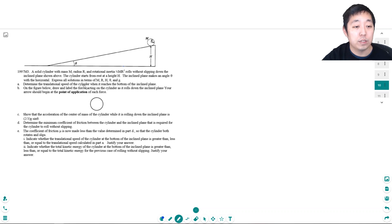Determine the translational speed of the cylinder when it reaches the bottom of the inclined plane. You can do this through energy. We've done these before with either energy or doing a free body diagram and the kinematic equations, but energy is a lot easier. So the initial energy here is just mgh. Right, that's the initial energy.